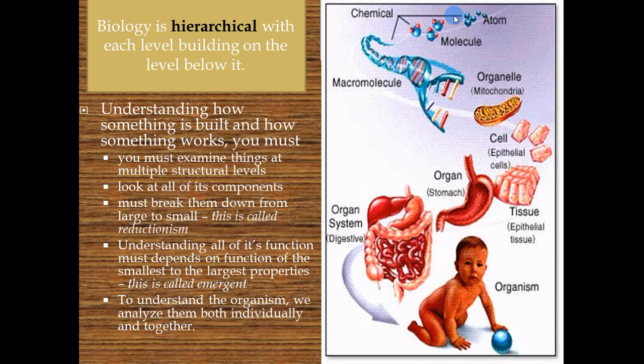When you break things down from large to small parts — for instance, when looking at a system and breaking it down to each individual cell — it's called reductionism. When you look at how each of these parts work and how they give structure to the next part, those are called emergent properties.